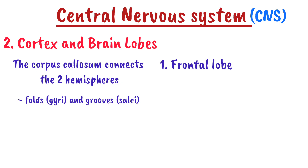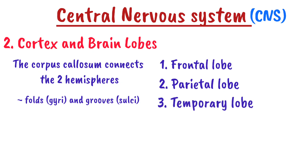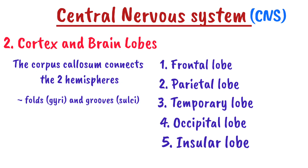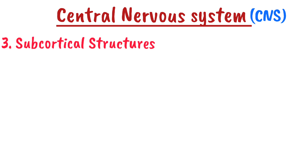The five lobes are: number one, the frontal lobe, which controls movement, reasoning, problem-solving, and speech. Number two, the parietal lobe, which processes sensory information such as touch, pain, and temperature. Number three, the temporal lobe, which involves hearing, memory, and language comprehension. Number four, the occipital lobe, which is responsible for vision. And number five, the insular lobe, which is associated with emotions and self-awareness.